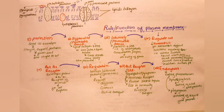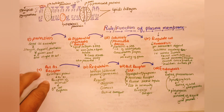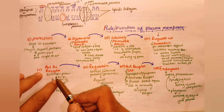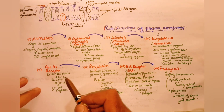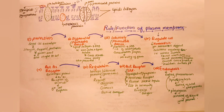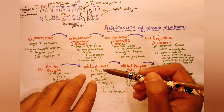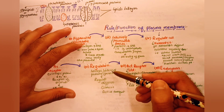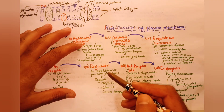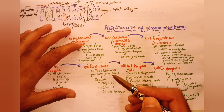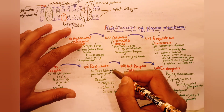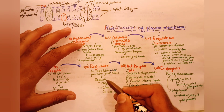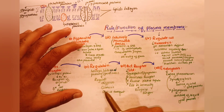The plasma membrane acts as a receptor. The extrinsic protein on the surface receives stimuli, and the cell produces a response. The intrinsic protein is partially embedded in the plasma membrane and is also referred to as integral protein.